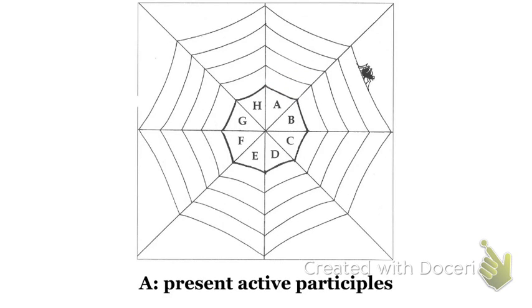First off, we're going to look in the story for present active participles. These are the participles that we've been learning about recently. They end in -ens or in the plural -antes and -entes, and they're declined like a third declension noun. We're just going to write these on the lines of the spiderweb. The introduction to your worksheet gives you a little background on why it's a spiderweb. This is a review, so it's just a fun format to review with.